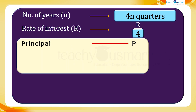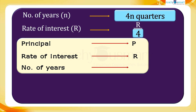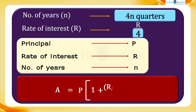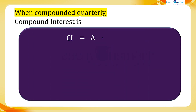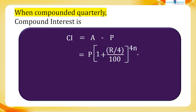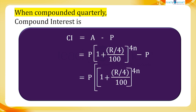And the rate of interest R becomes R by 4 for every quarter. We can generalize this as: if principal equals P, rate of interest equals R, number of years equals N, then the amount A equals P multiplied by (1 + R/4 divided by 100) raised to the power 4N. And the compound interest CI equals A minus P, equals P multiplied by [(1 + R/4 divided by 100) raised to 4N minus 1].